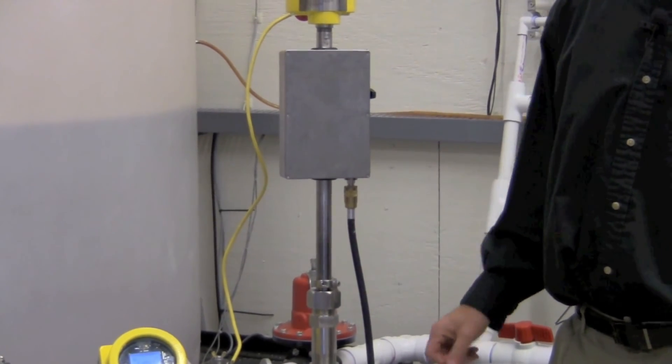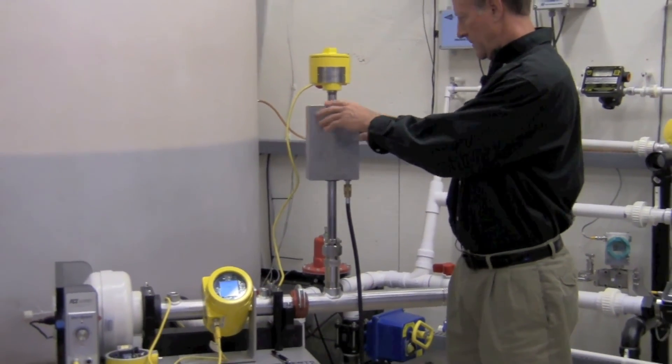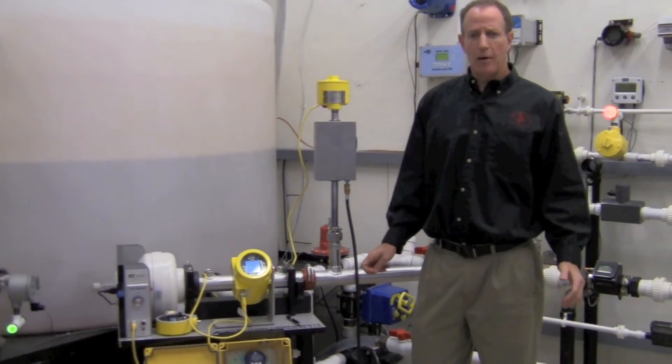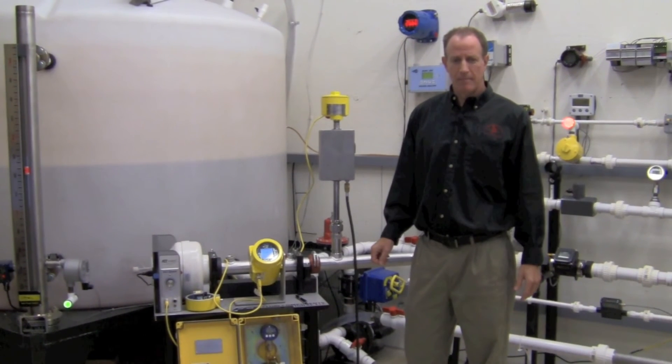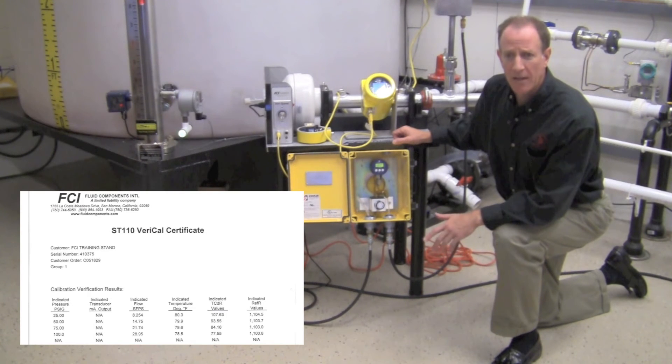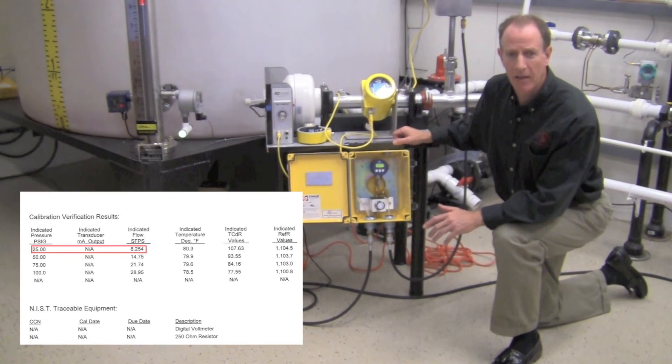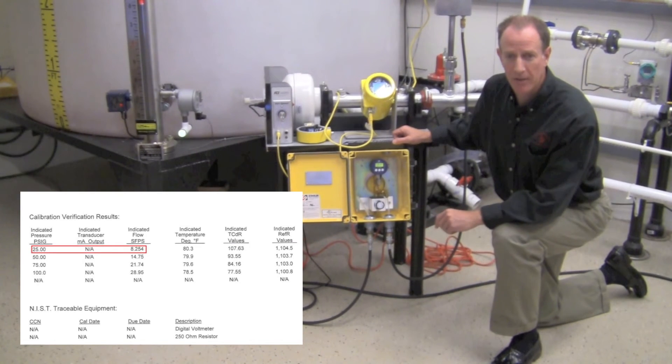Open the check valve. The nitrogen is now flowing across the sensor. FCI provides data at several pressure points. We'll check calibration at two points in this demonstration. Referencing the calibration documentation, we note that a pressure of 25 PSI should yield a flow reading of 8.2 feet per second.